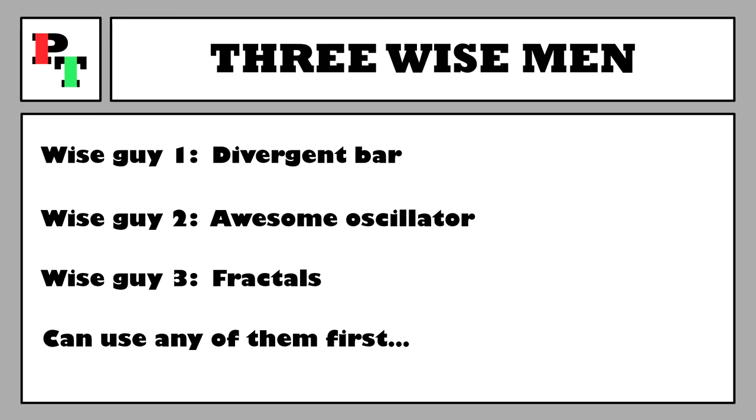Even though the three wise men are presented in order, you don't have to enter off Wise Man 1 first — you can take any of the signals first so long as entry criteria are met. For us in this strategy, we'll keep it simpler and enter closer to their natural order: always starting with a divergent bar signal first, then either the Awesome Oscillator or fractal wise men as valid follow-up entry signals. If we really struggle for divergent bar signals we'll consider the other entry signals.